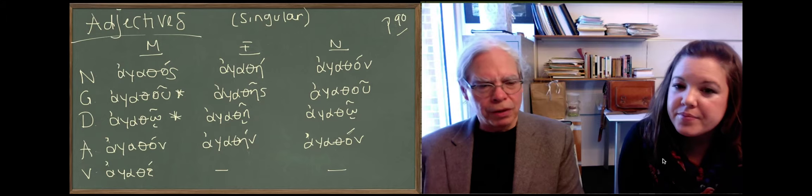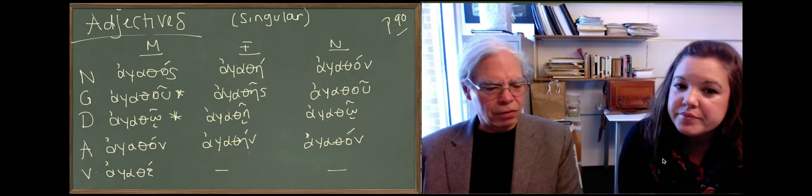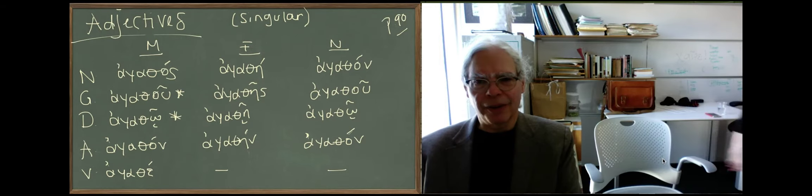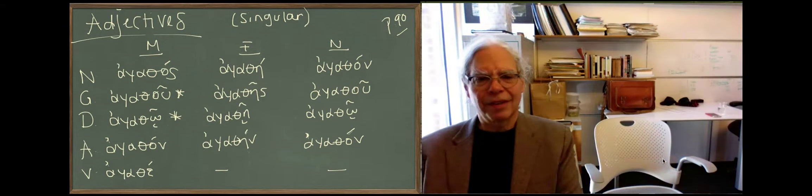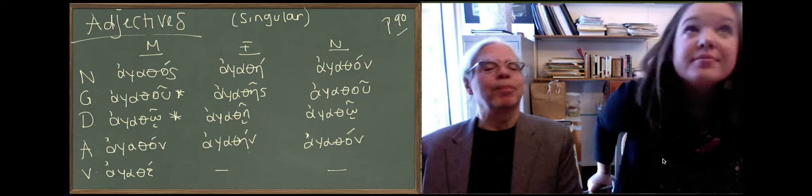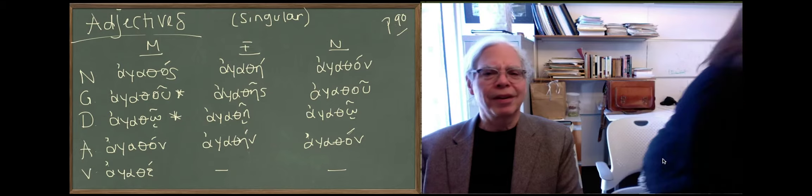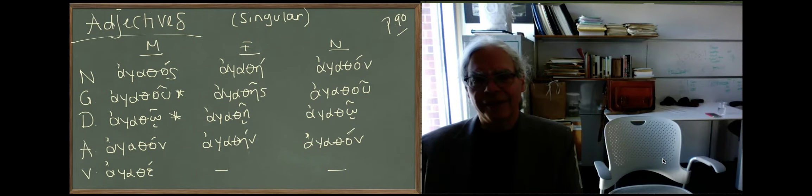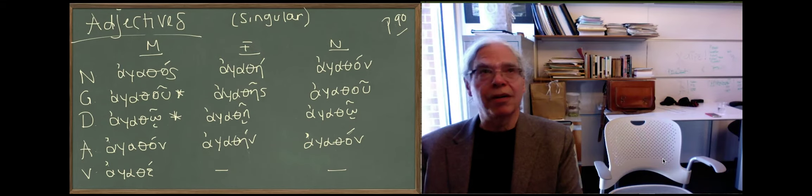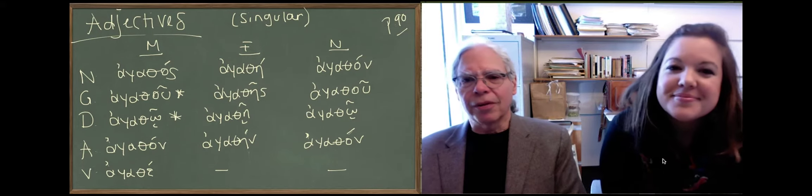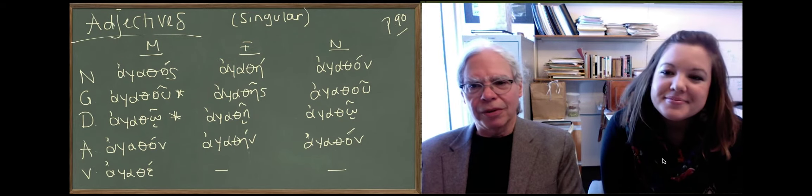So what you've done is you've taken the endings of first and second declension nouns. We lost the light here, hold on. There we go. You only got the top part, not the bottom. All right, we'll make do. The camera's adjusted, all right.